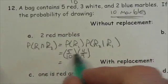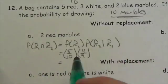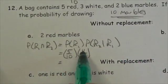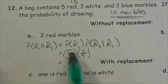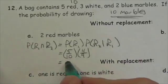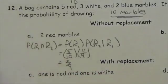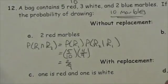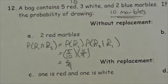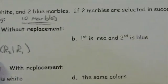When we simplify this: 5 times 4 is 20, divided by 10 times 9, which gives us 20 out of 90. The answer becomes 2 out of 9. The probability of getting two red marbles is 2 out of 9.